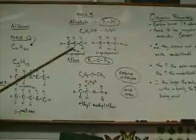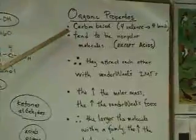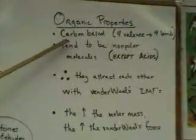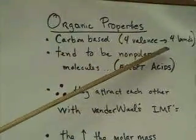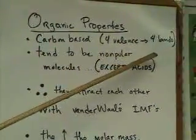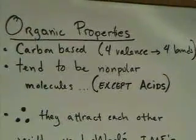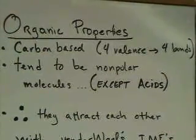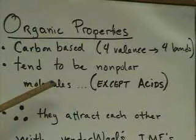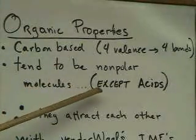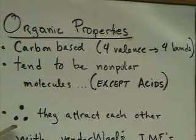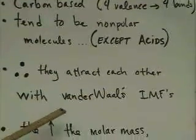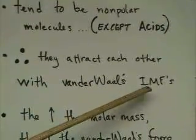And the last thing we want to do is just remind you or point out a few things about organic compounds and the resulting properties. First of all, they're carbon-based. So if something's organic, it's because it is rich in carbon. Remember, carbon has four valence electrons. Therefore it needs to bond four times. It could do that with all single bonds. It could do it with a combination of single and multiple bonds. They tend to be nonpolar molecules, a few exceptions including the acids, but most of them are nonpolar. Therefore, going back to your bonding ideas, they attract each other with van der Waals forces or intermolecular forces, if you like.